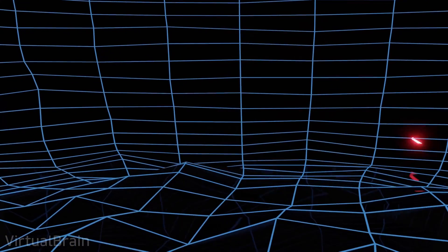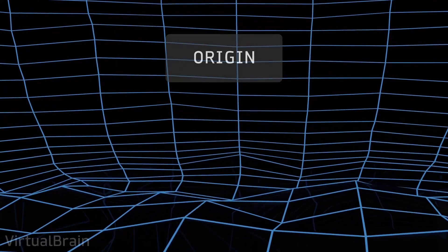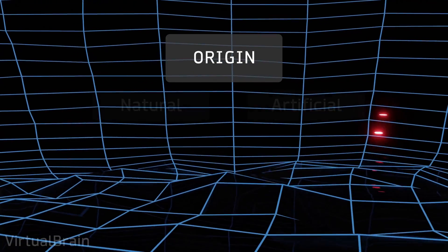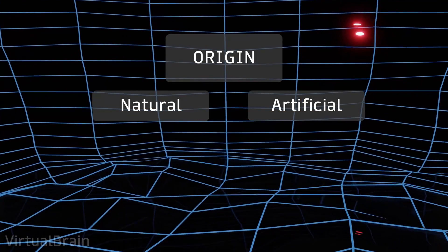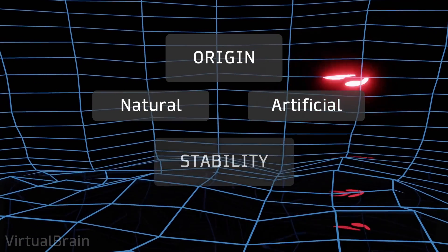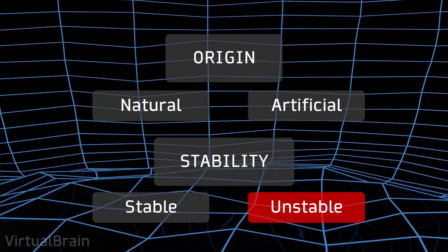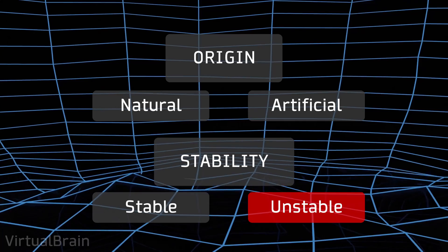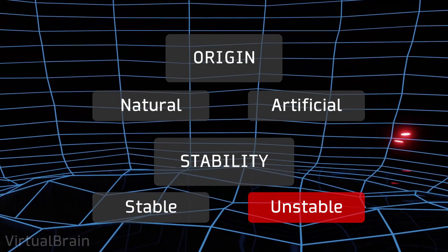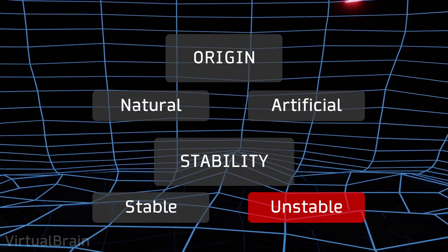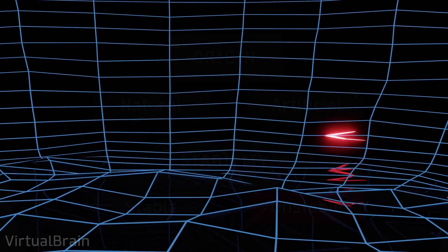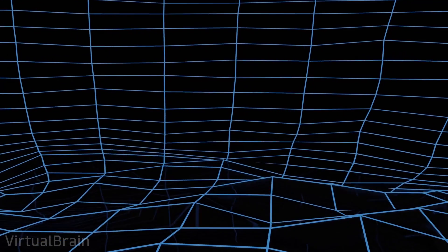But that's not all, we can also categorize isotopes on the basis of two criteria. First, whether they are naturally or artificially produced. And second, whether the isotopes are stable or unstable. The latter category is the one that interests us, since an unstable isotope is what is known as a radioisotope or radioactive isotope.